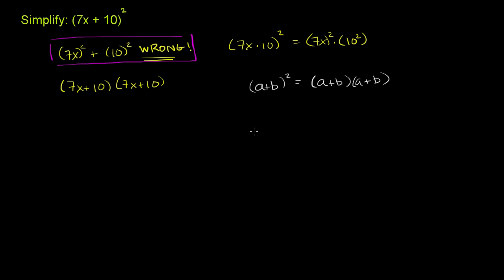And now we can use the distributive property. We can distribute this a plus b times this a. So we get a times a plus b. And then we could distribute the a plus b times this b. Plus b times a plus b. And then we distribute this a. We get a squared plus ab.